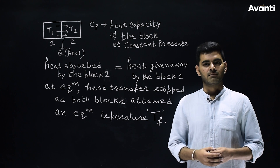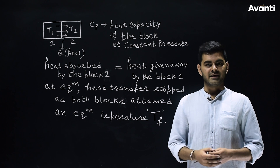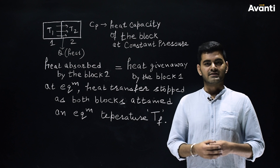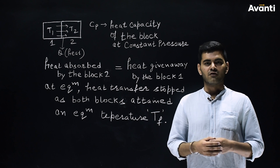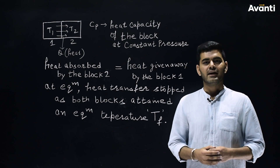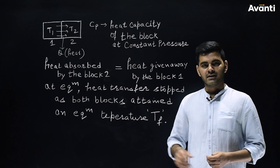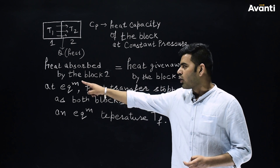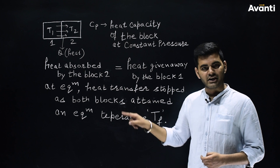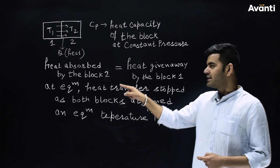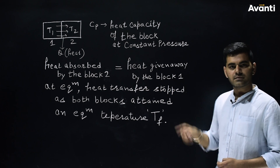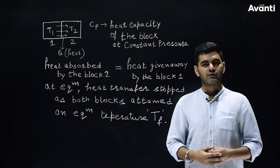Considering the heat capacity of the block at constant pressure as Cp, and since both blocks are identical in nature, we can say the Cp value of both blocks is the same. Initially, the heat absorbed by block 2 is equal to the heat given away by block 1.